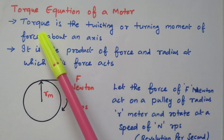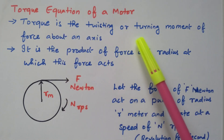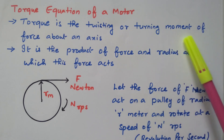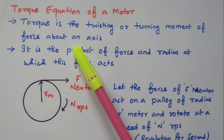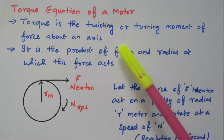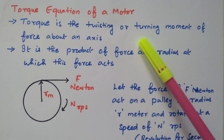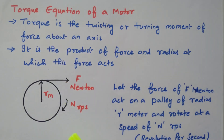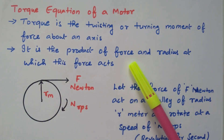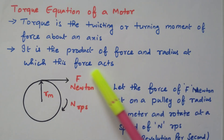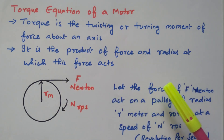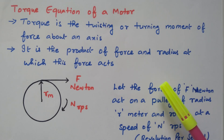First we will see what is torque. Torque is the twisting or turning moment of a force about an axis. It is nothing but twisting force or turning moment — a rotation with a force. It is the product of force and radius at which the force is acting.